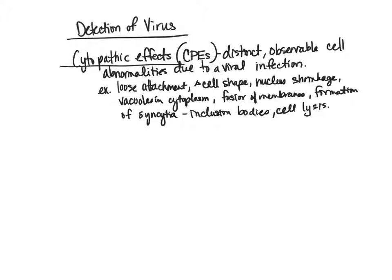Let's talk about different ways to actually detect a virus using research and laboratory methods. One method is looking for cytopathic effects — taking a piece of tissue like a biopsy and looking for those different cytopathic effects. Another way is through a hemagglutination assay.